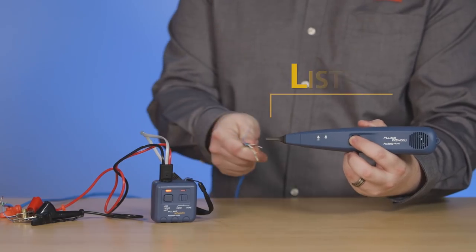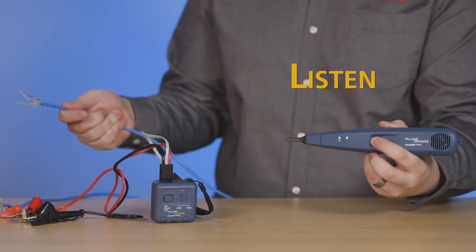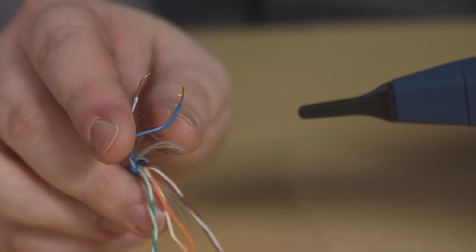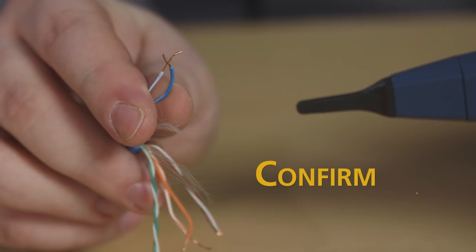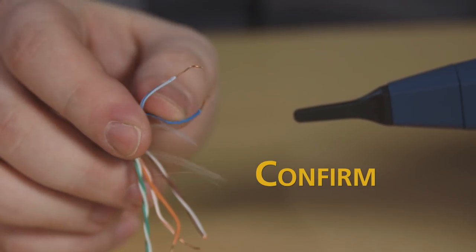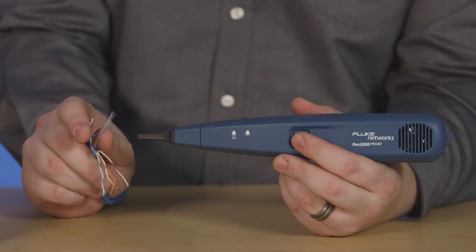Using the Pro3000 probe at the opposite end of the cable, listen to the distinct tone. To confirm you've got the right pair, simply touch the tested pair together for two seconds to create a short.